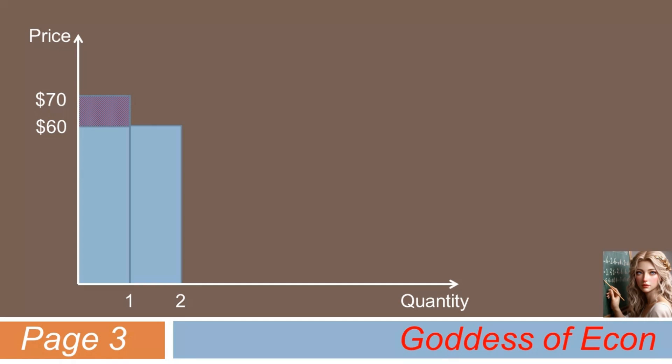Now, let's assume the market price is at $50. At that price, Tito would also buy the item, increasing the total quantity demanded to three. And at that price, Michael's gain from the trade increases further by an additional $10, and Jackie as well benefits from it, gaining $10 for the first time. So the total gain by all the consumers would equal $30 in this case, which is depicted by the shaded area of the graph.